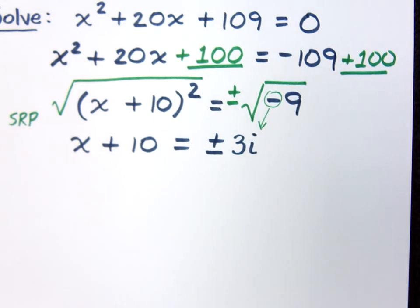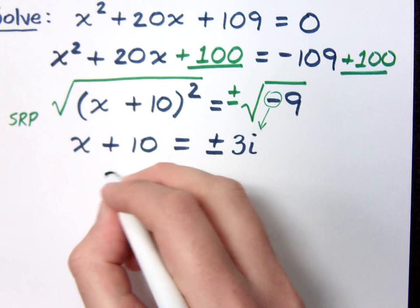Am I done here? When we solve, it's all about getting x completely by itself, right? That means I've got to move the 10 over.